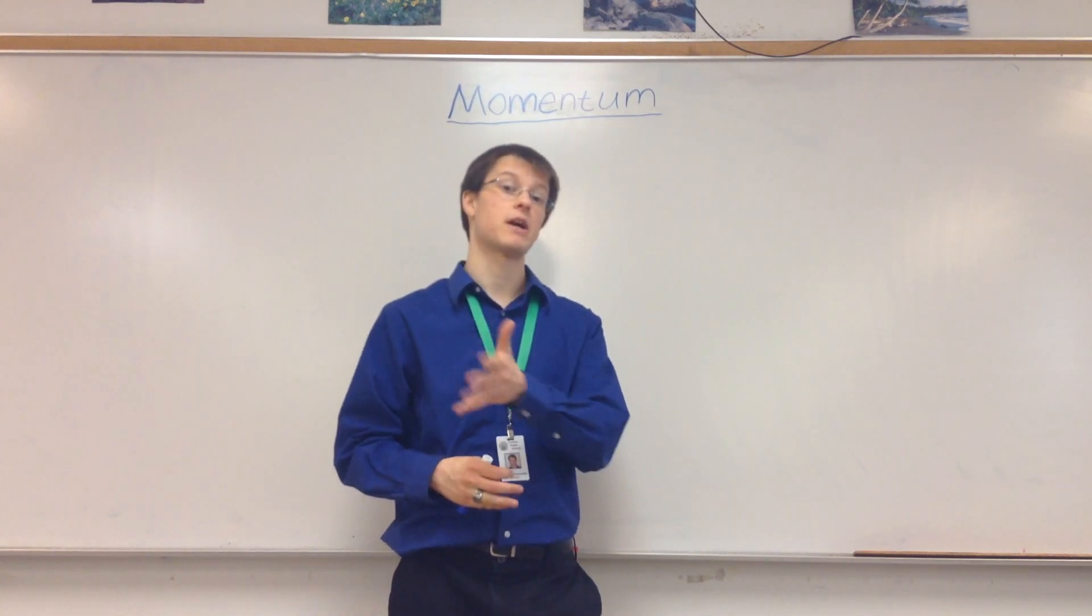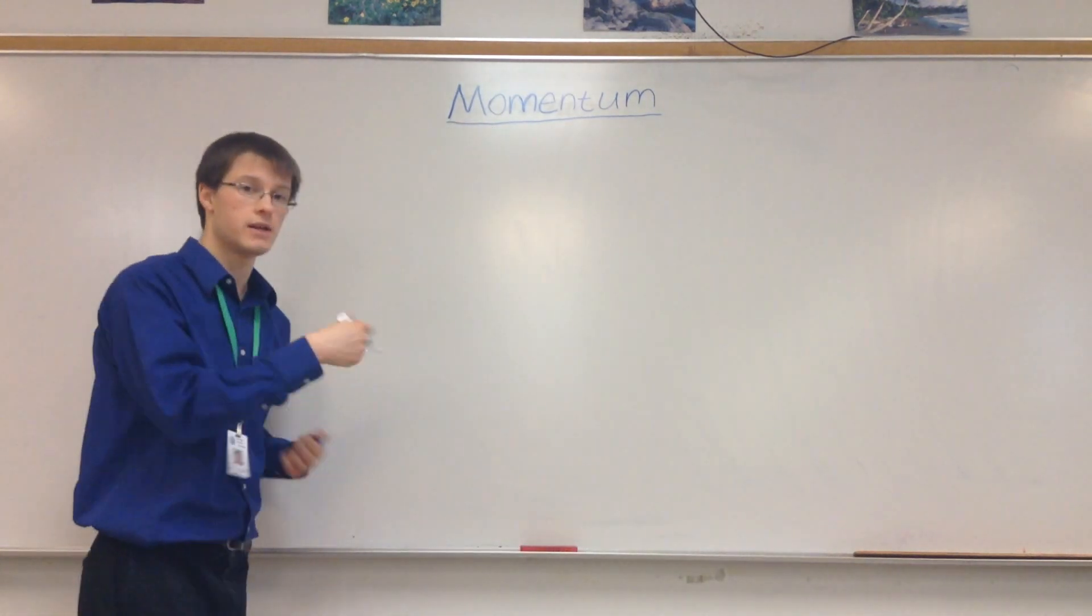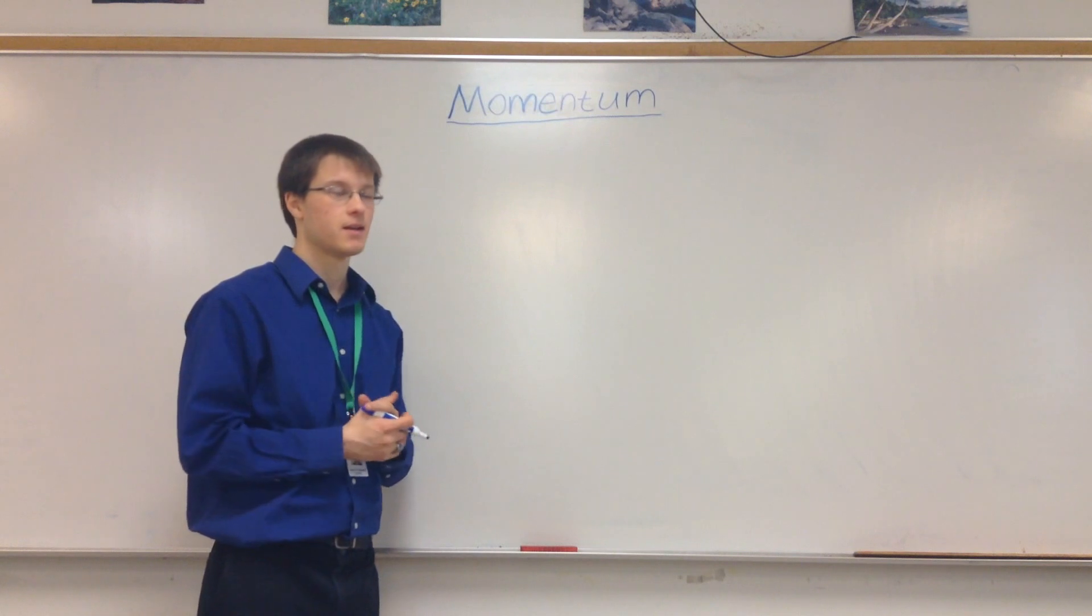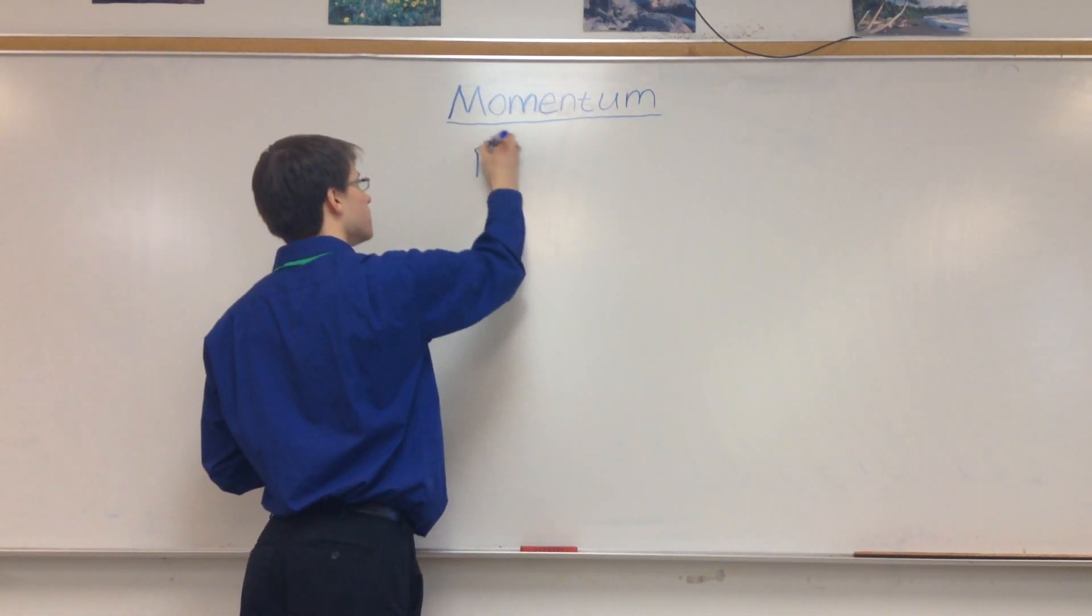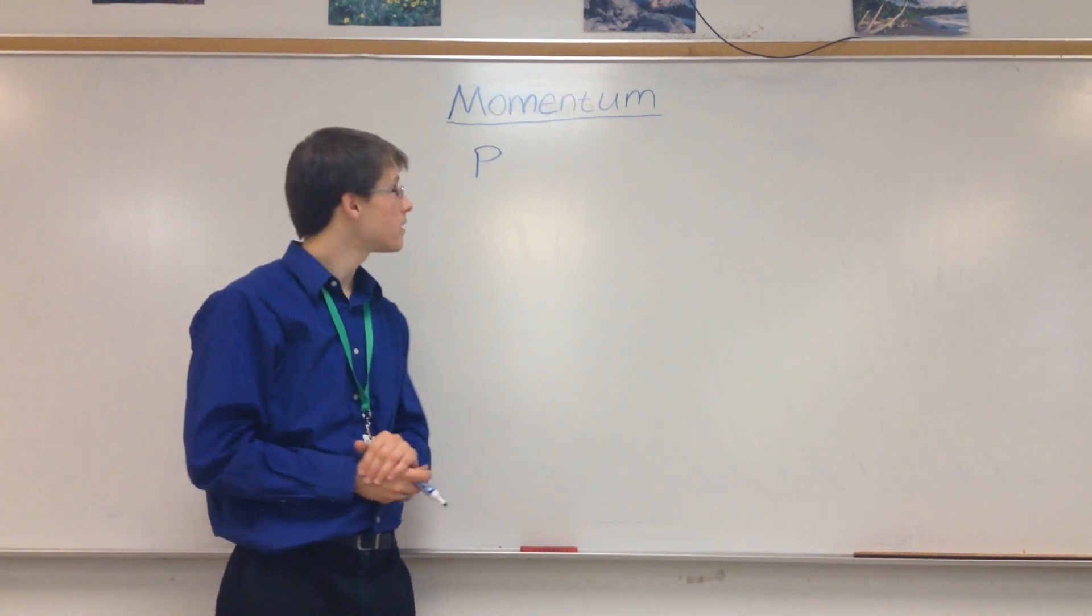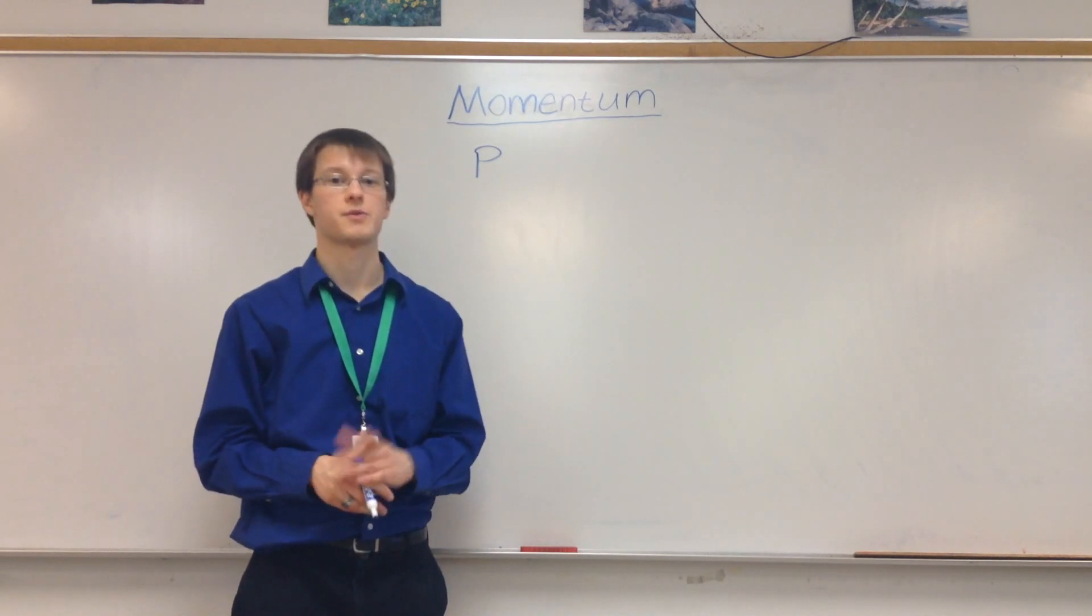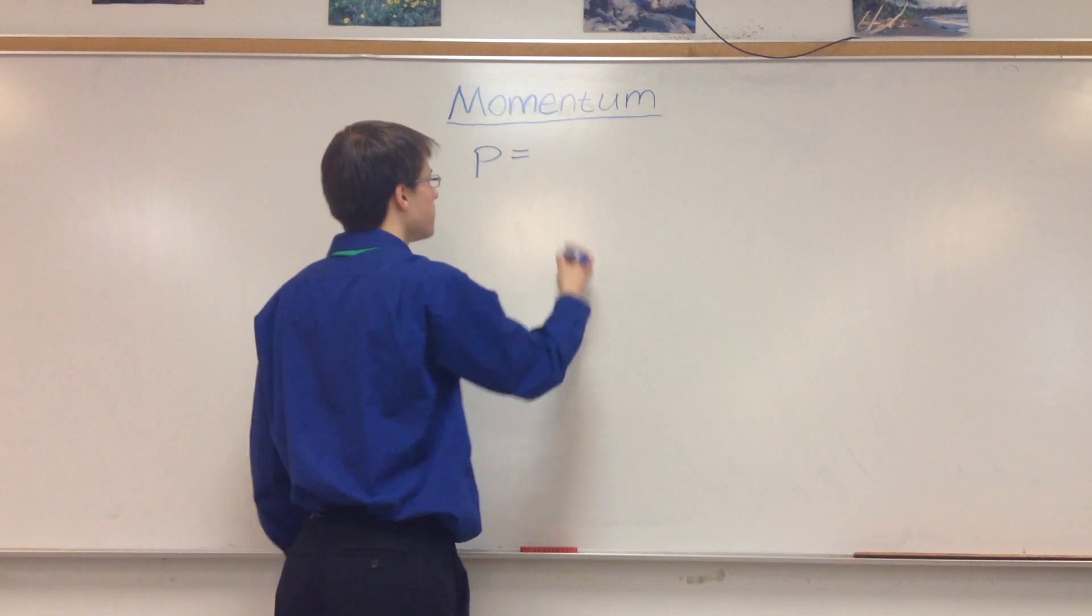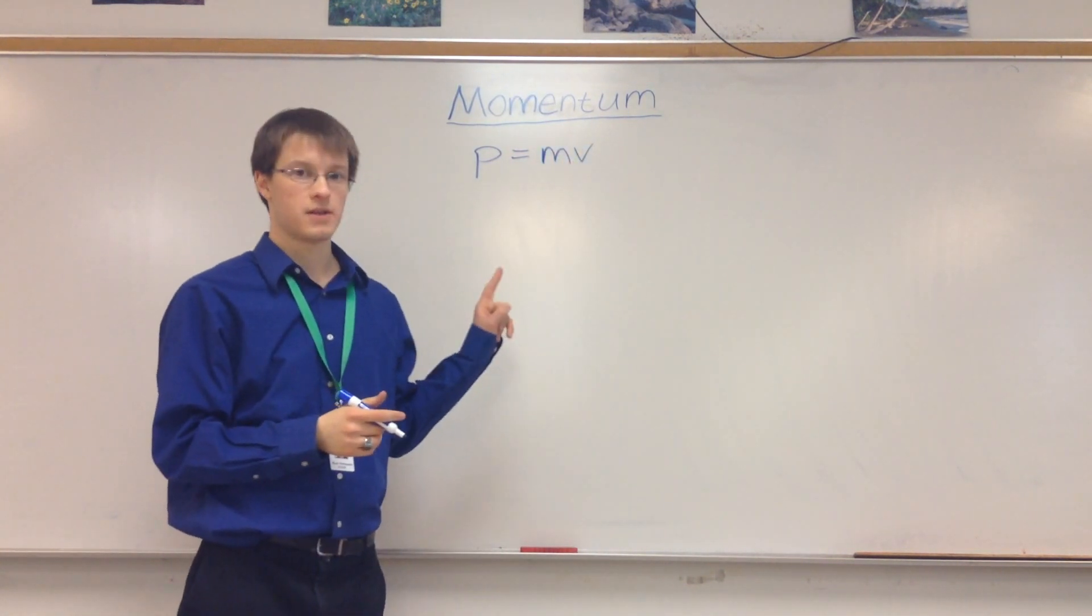So momentum must be directly proportional to both of these factors. And indeed, it is. Because momentum starts with m, m is already taken by mass, so we call momentum p. Some people think this is because momentum used to be called impetus. And the Latin root for impetus starts with a p. So we use p. And p is being directly proportional to both m and v is actually just equal to mass times speed or velocity.